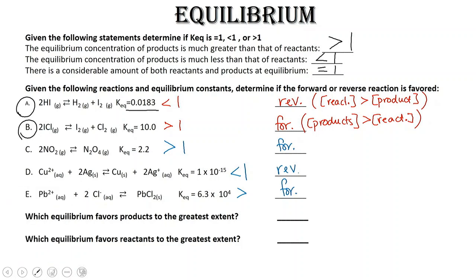For D, we have copper ion—copper 2+ ion—plus silver solid produces copper solid and 2 silver ions. Notice our equilibrium is less than 1, so the reverse reaction is favored. We have more reactants than products in our reaction vessel.